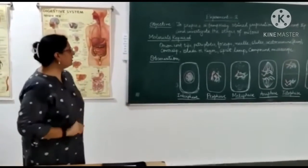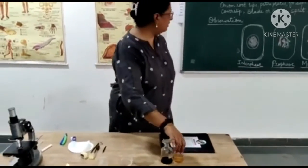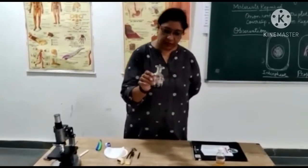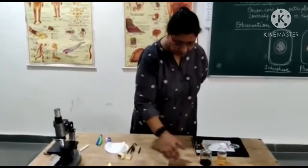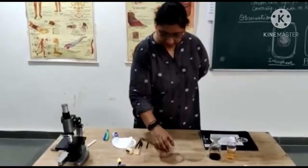In this experiment, we require some materials. Note down the materials required. We will need onion root tip, the stain acetocarmine, watch glass, and petri plate.